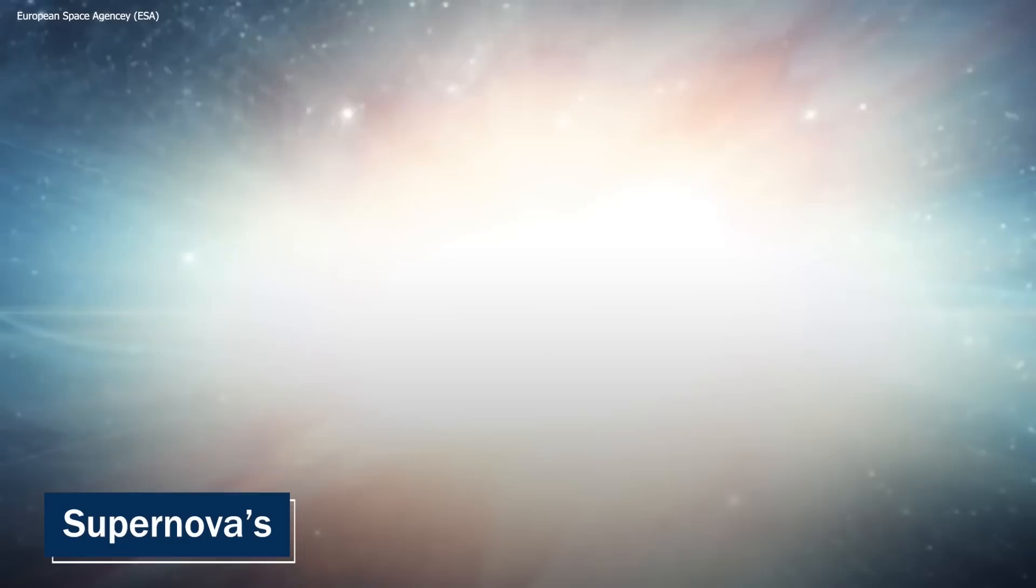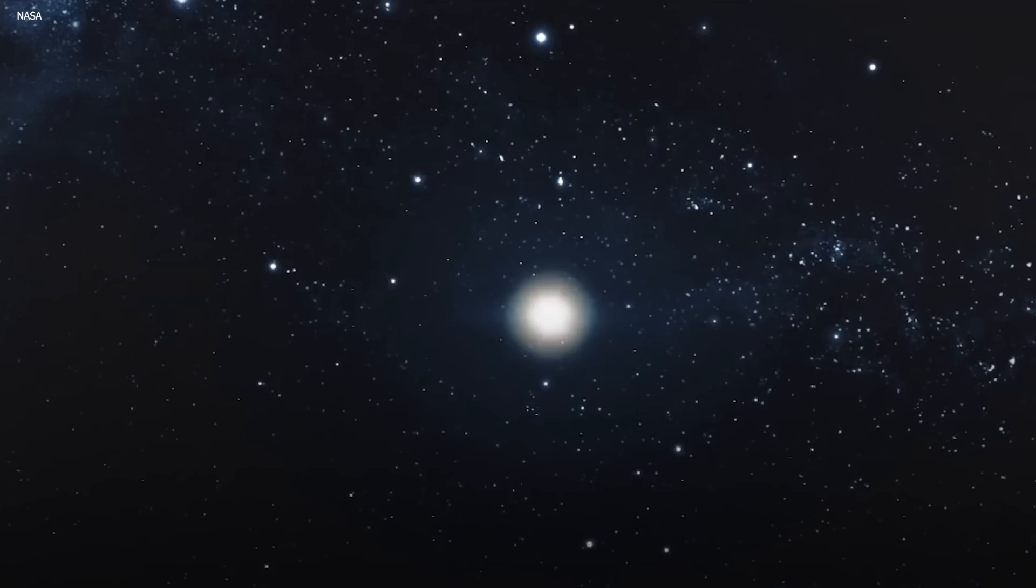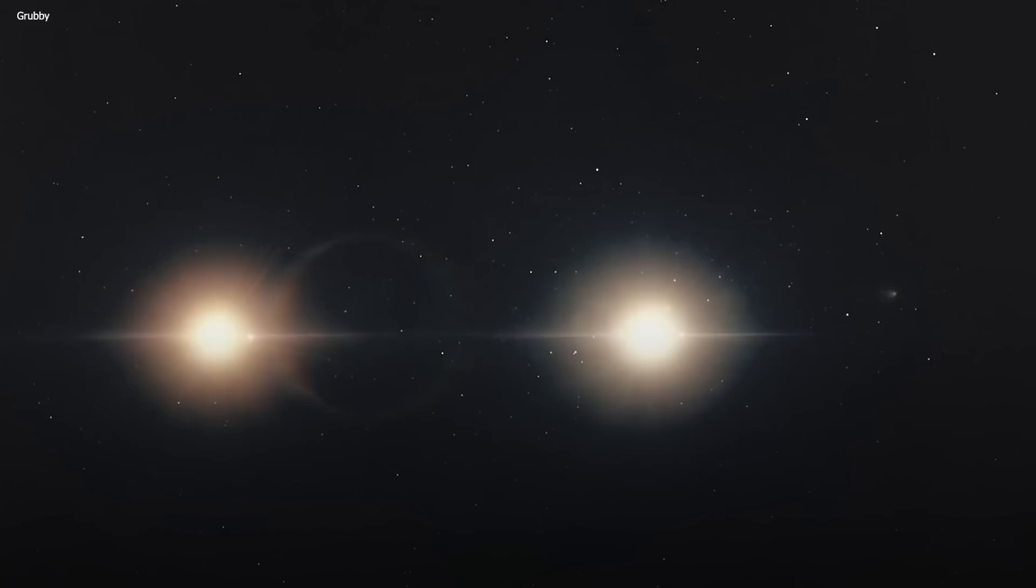Now, when you first hear of it, a supernova sounds glorious, and in a way it is. But when you really begin to understand it, it's terrifying. Supernovas are incredibly powerful explosions that occur when certain types of stars reach the end of their lives. These explosions release huge amounts of energy, creating some of the brightest and most energetic events in the universe. There are two main types of supernovas, type 1 and type 2.